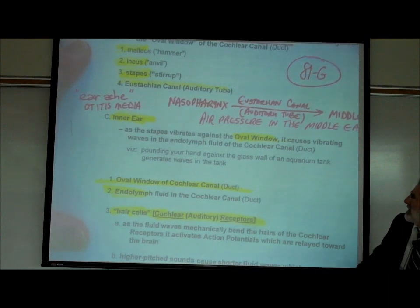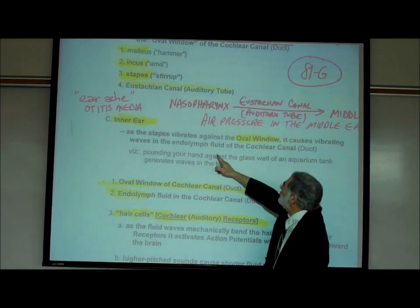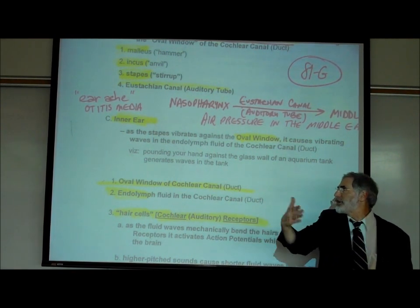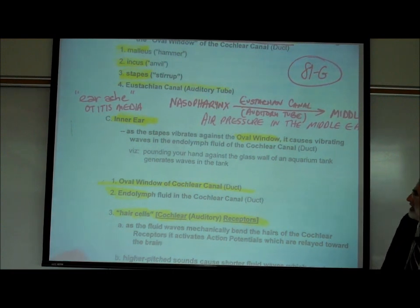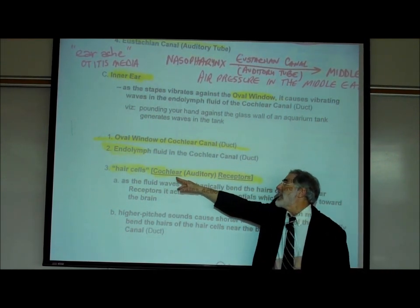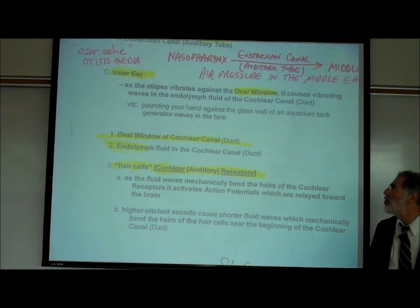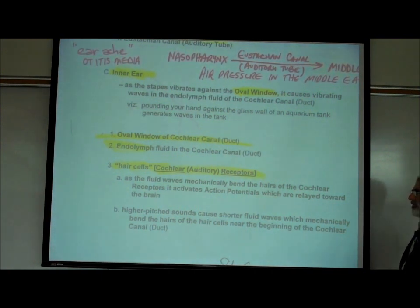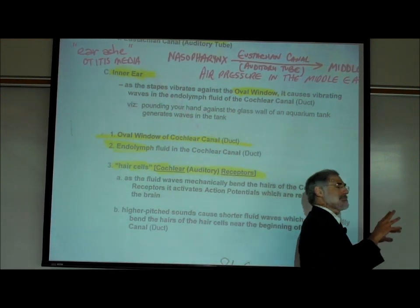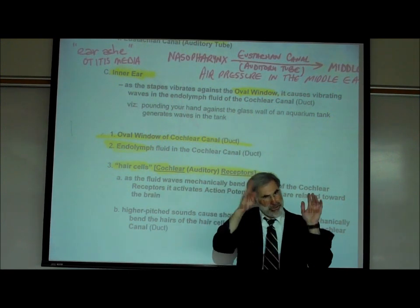The stapes vibrates against this membrane called the oval window, causing vibrating waves in the endolymph fluid of the cochlear canal. There's endolymph fluid in the cochlear canal, and there are the hair cells. The technical name is cochlear receptors or auditory receptors — these are the sensory neurons in the cochlea, the sensory neurons for hearing sound. Because they have little hairs, they're commonly called hair cells.